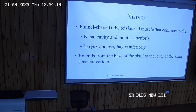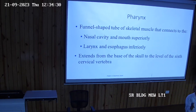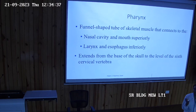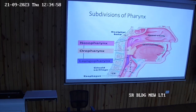The next structure behind the nose and paranasal air sinuses is the pharynx. The pharynx is a fibromuscular tube — a funnel-shaped structure which lies behind the nasal cavity, behind the oral cavity, and behind the larynx. Accordingly it has three parts: the nasopharynx, oropharynx, and laryngopharynx.